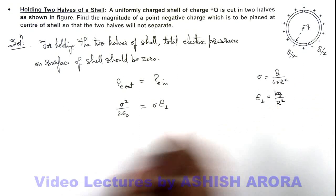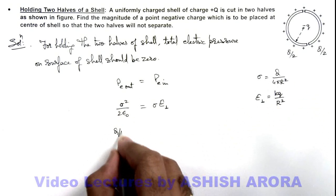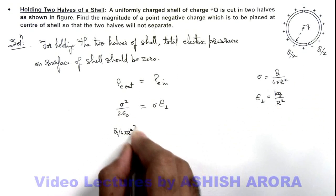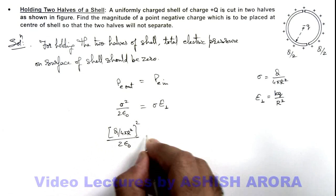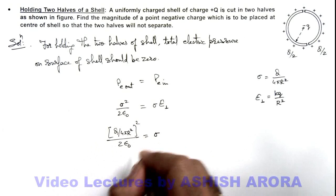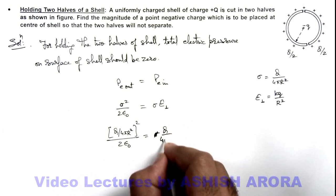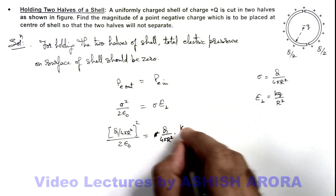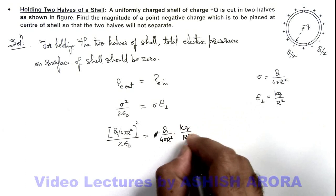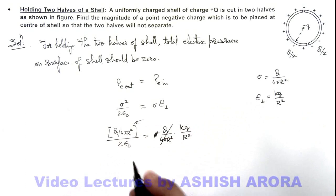So if we substitute these values over here you can see what we are getting: Q by 4 pi r squared whole squared by 2 epsilon not is equal to sigma, which is Q by 4 pi r squared, multiplied by electric field in normal direction which is k q by r squared. Here this Q by 4 pi r squared will cancel by this. Here we can write as 1 by 4 pi epsilon not.